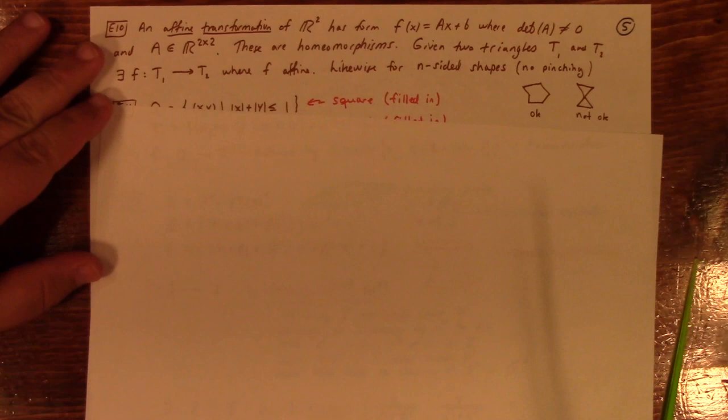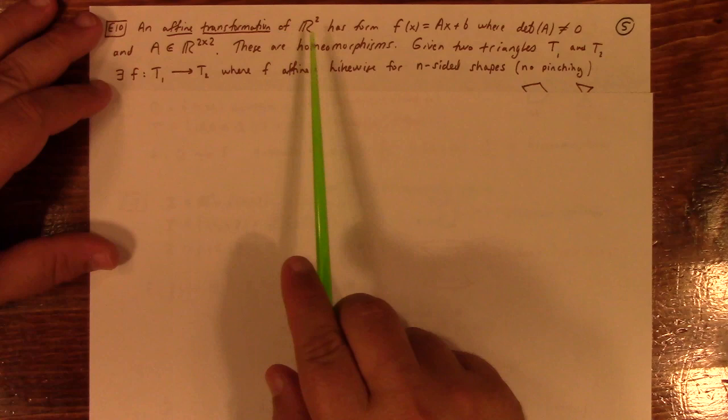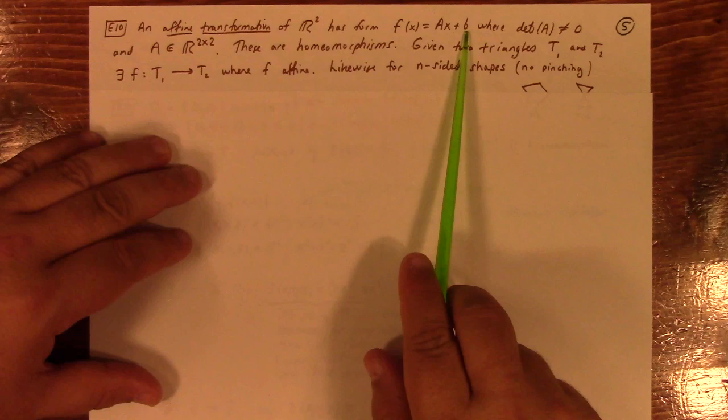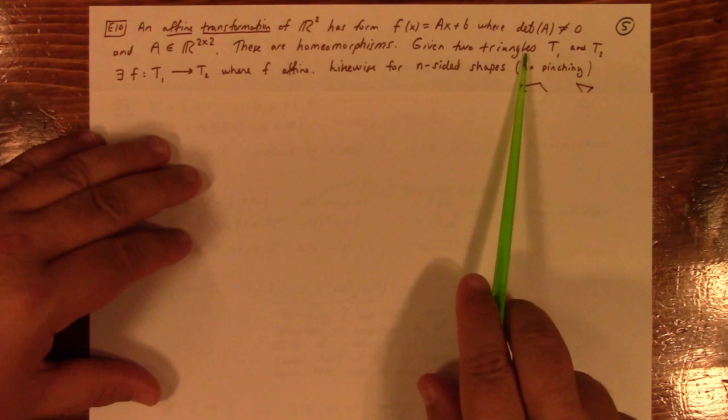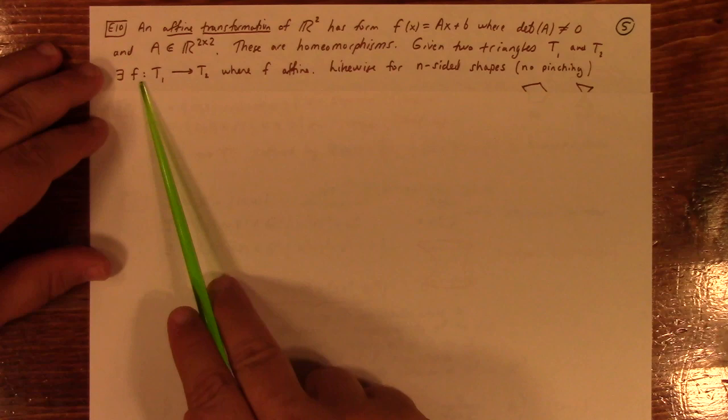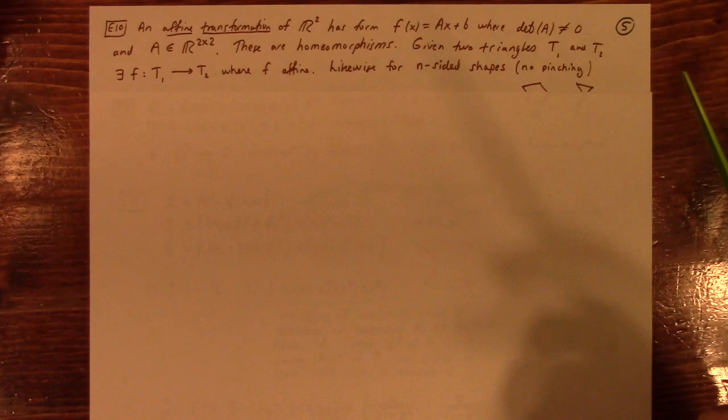Example 10 in an affine transformation is basically a two by two matrix times the column vector X plus a constant vector B where the matrix is invertible. So, these are homeomorphisms. They'll take a triangle to a triangle and not just that. You can find, given two triangles, you can find an affine transformation which maps one triangle to the other. So any two triangles are homeomorphic.